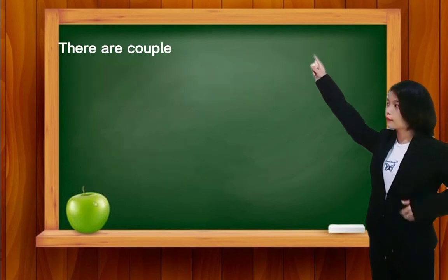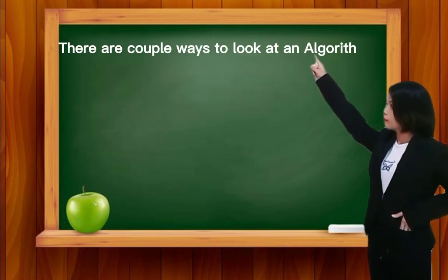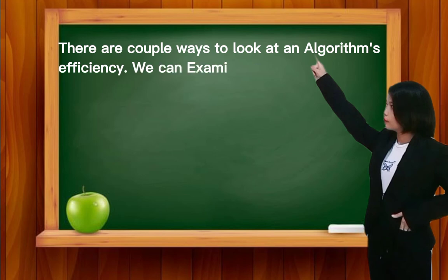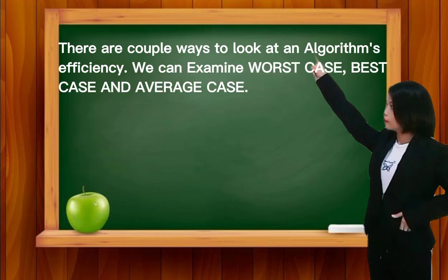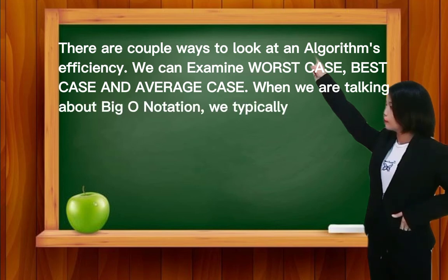There are a couple ways to look at an algorithm's efficiency. We can examine worst case, best case, and average case. When we are talking about big O notation, we typically look at worst case.